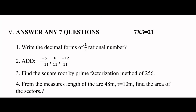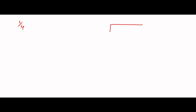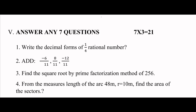First one: write the decimal form of 1/4 rational number. So 1 divided by 4 — 4 goes into 1.0, 4 fives are 20, so the decimal form is 0.25.